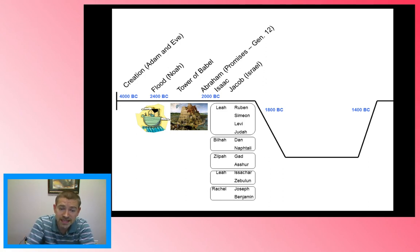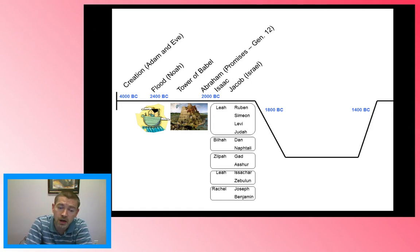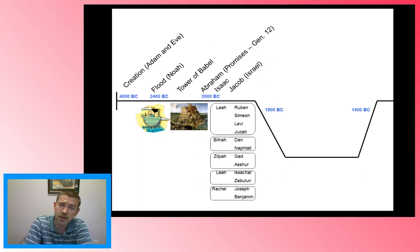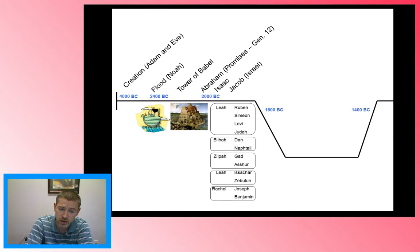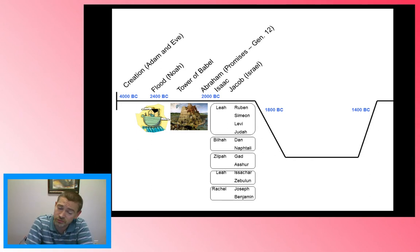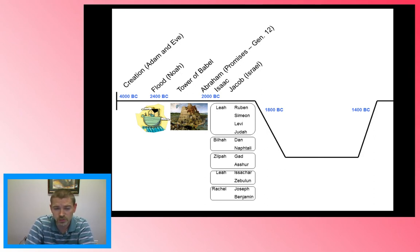Leah has Reuben, Simeon, Levi, and Judah. Rachel's handmaiden Bilhah has Dan and Naphtali. Leah's handmaiden Zilpah has Gad and Asher. Then Leah again bears two more children, Issachar and Zebulun. And finally, Rachel is allowed by God to give birth to Joseph and Benjamin. So that completes Jacob's 12 sons, which will become the heads of the 12 tribes of Israel.